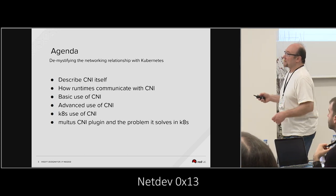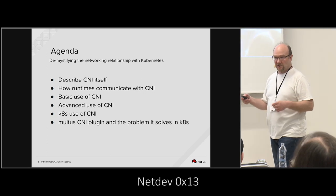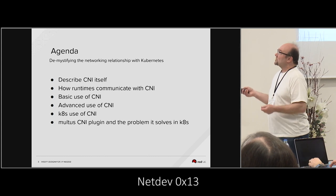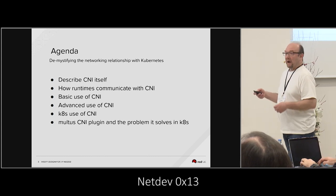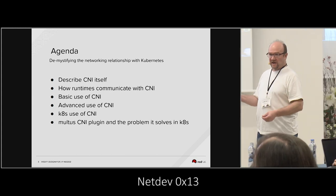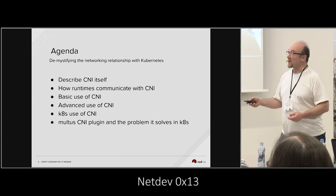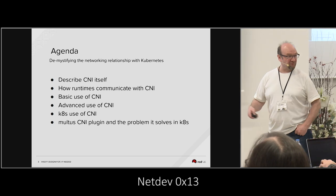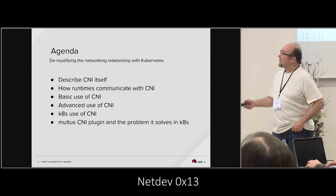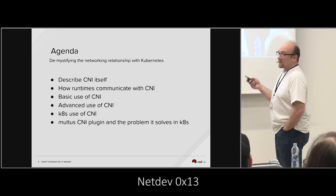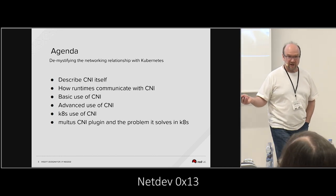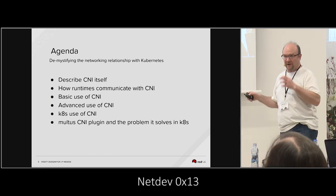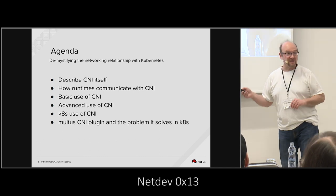What we will talk about: I'm going to spend a lot of time on what CNI is. It's the glue that holds all this container networking together. I'm going to talk about how the runtimes use it and give some basic usage of CNI. Then we'll get into what Kubernetes does and doesn't do regarding namespaces, and then talk about a specific plugin, Multus, created originally by Intel, that will solve some of the problems — or limitations, depending on your point of view — of what Kubernetes doesn't bring to the table.